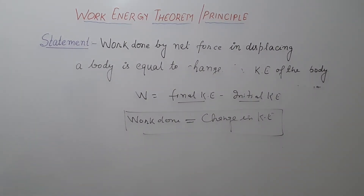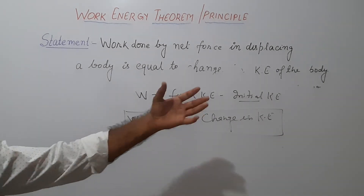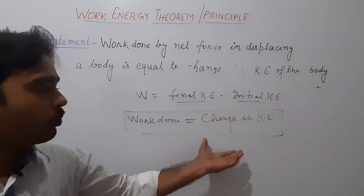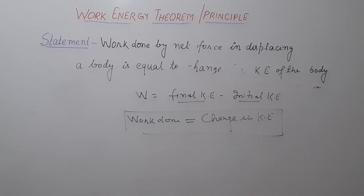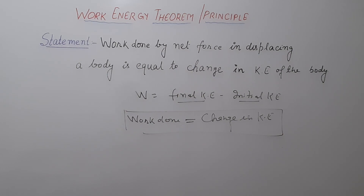One more thing to clarify: change in kinetic energy — work done may also be stored in the form of potential energy. So work done is equal to change in potential energy. Again we can say that work and energy are equal, and work done on a body is stored in the form of energy of the body. This was the concept of the work-energy theorem, or work-energy principle. Thanks for watching, see you in the next video.